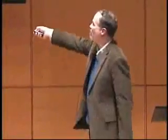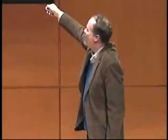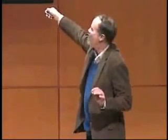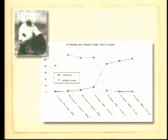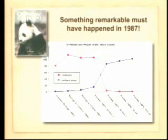Barbara Forrest, an expert in the history of this idea, got all of the earlier versions. What she did was she graphed the numbers — the number of mentions of creationism and the number of mentions of intelligent design in the earlier versions. And you will notice that something remarkable happened in 1987, which is the mention of creation dropped to almost zero and the mention of intelligent design moved up to take its place.